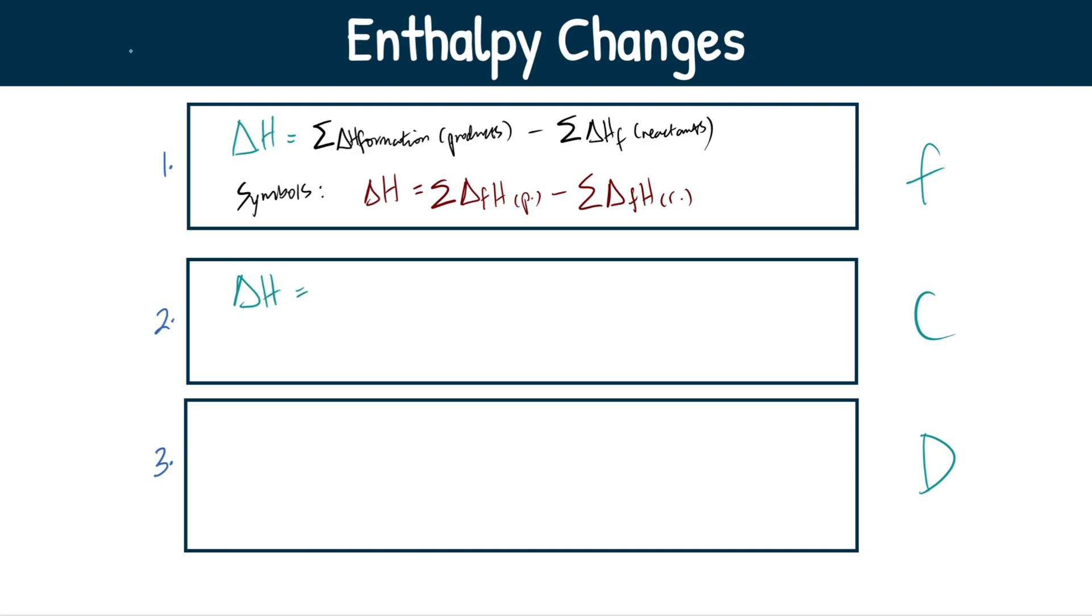So enthalpy change of reaction again is going to be the sum of enthalpy change of combustion reactants minus sum of enthalpy change combustion, and this is now going to be products. So you can see how they're super similar. You just flip them around and this is all to do with the Hess cycle and the route of reaction.